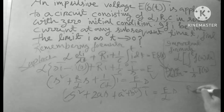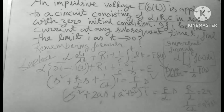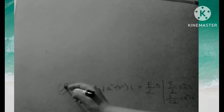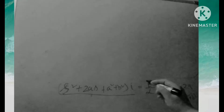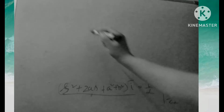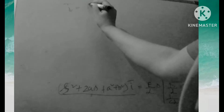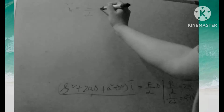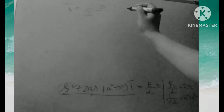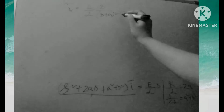Here, R/L = 2A and 1/(CL) = A² + B². So we get: (S + A)² + B²)·Ī = E/(L·S). Solving for Ī, we get: Ī = (E/L) / [S·((S + A)² + B²)].